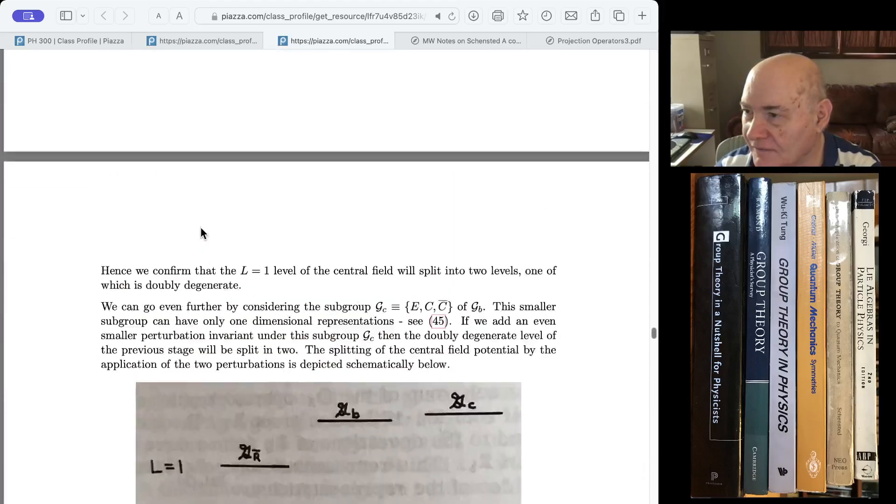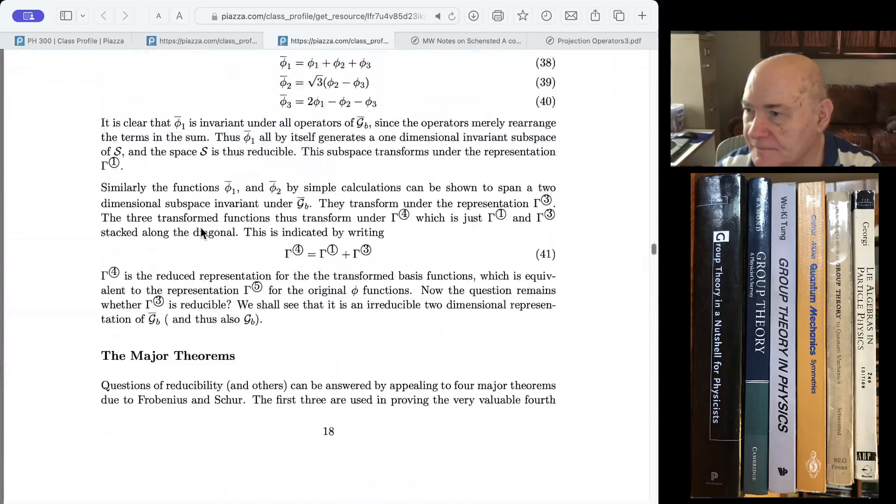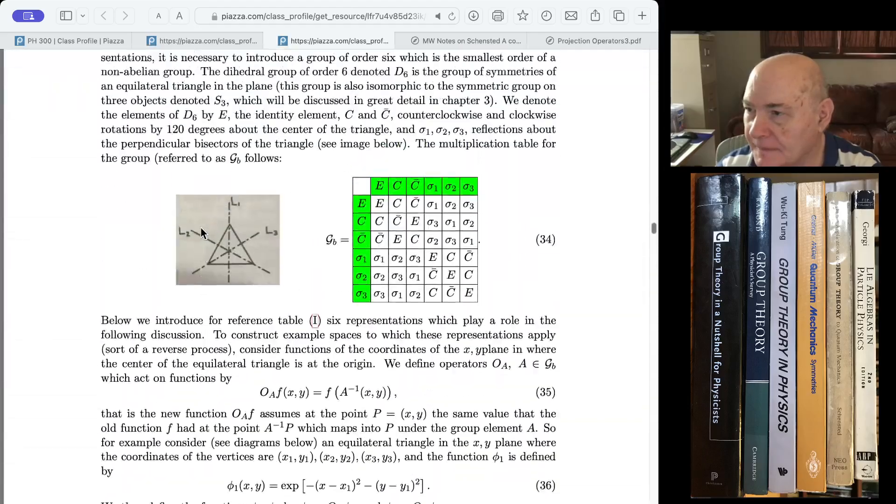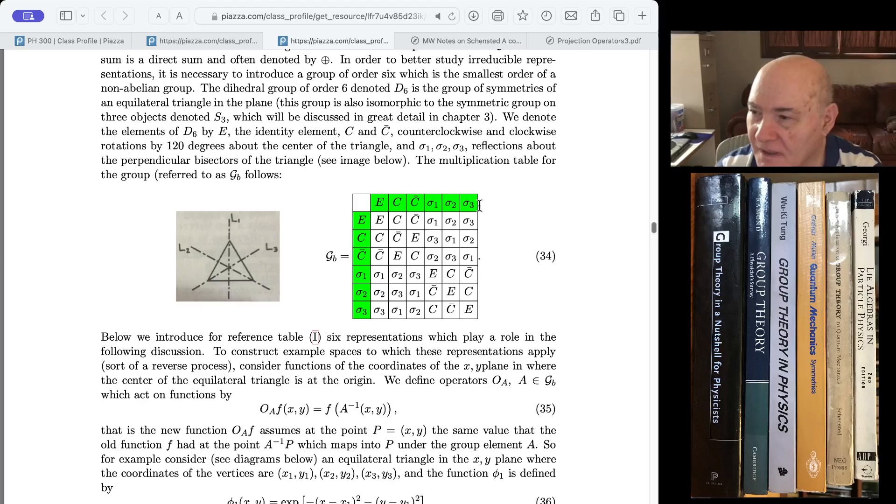Take this group. These are the group elements. E, C, C bar, sigma 1, sigma 2, sigma 3. If we multiply all these elements by, let's say, E, we get the same thing. By C, we get the same elements in a different order. See, we're summing over all the elements in a row, in one case when we're acting from the left. And the sum of all the elements is still the same because this is known as a rearrangement lemma. It's easy to prove in group theory. No two elements in this can be the same. And we have to get every element to the group. And when we do it from the right, we're summing over columns. And you see the columns also have all the group elements.